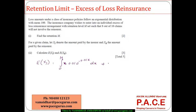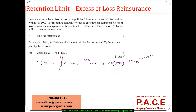The second case is when the claim is greater than M — the insurer pays exactly M. The probability that the claim exceeds M is e^(−0.01M), so this part contributes M · e^(−0.01M) to the expected value of XI.